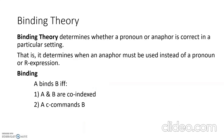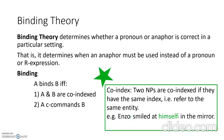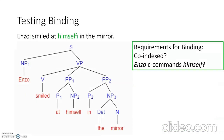This brings us to binding theory. Binding theory determines whether a pronoun or anaphor is correct in a particular setting — it determines when an anaphor must be used instead of a pronoun or an R-expression. The definition of binding is dependent on C-command. A binds B if and only if A and B are co-indexed — meaning they refer to the same entity — and A C-commands B. For example, 'Enzo smiled at himself in the mirror': himself and Enzo are co-indexed because they refer to the same entity.